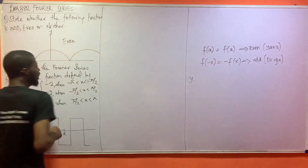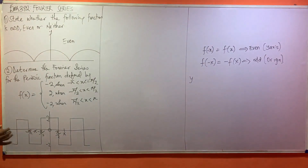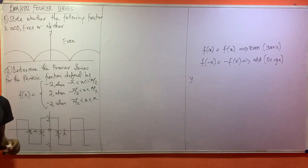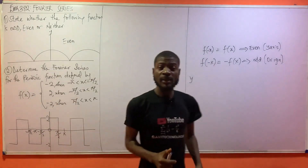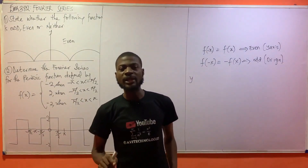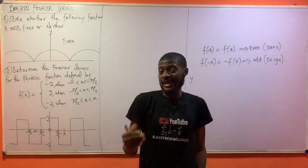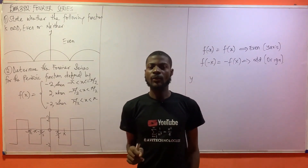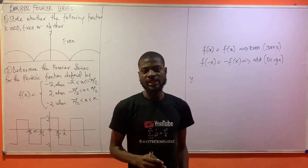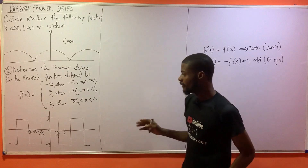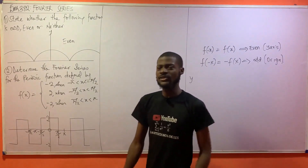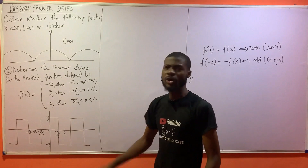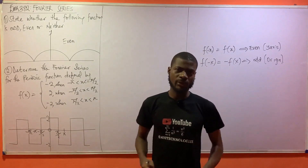The second question says: determine the Fourier series for the periodic function defined by this graph. They helped you by drawing the graph, because with a graph we can determine if a function is even or odd, and hence reduce the stress of solving for Fourier series coefficients. Now, is this function even or odd?